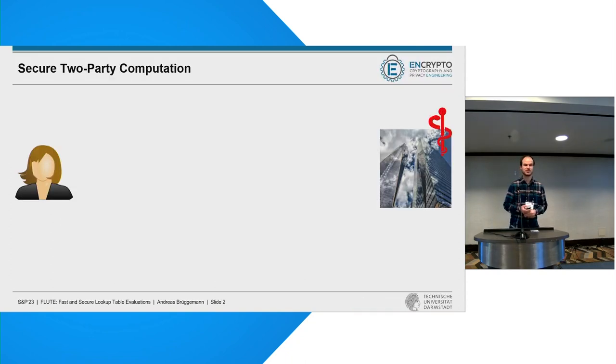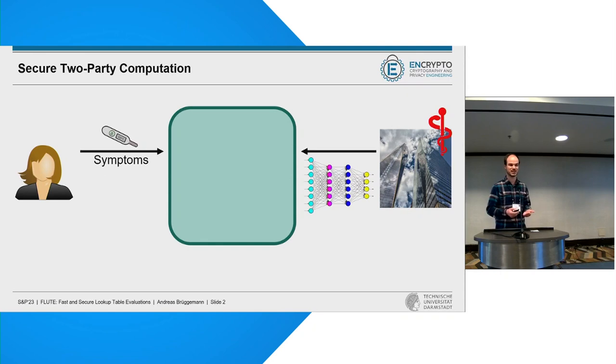In this work we consider secure two-party computation. Here's a short motivating example: consider a system where on one side we have a patient, on the other side a medical service provider. We want to run some interaction where the patient inputs some symptoms. The medical service provider has a machine learning model taking those symptoms as input and can return a diagnosis to the patient.